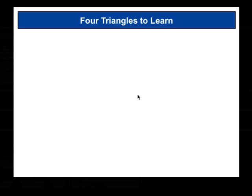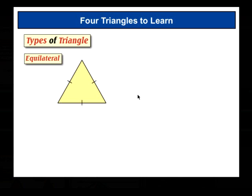You should know that triangles have three sides, but you also need to know about the four types of triangle. Right, here we go. First up, the equilateral triangle. It's equilateral because all three sides are equal.